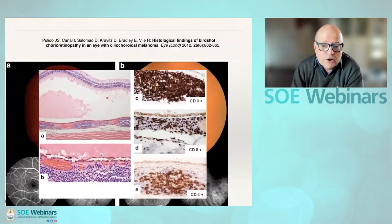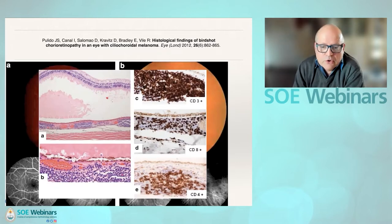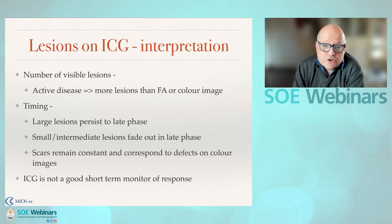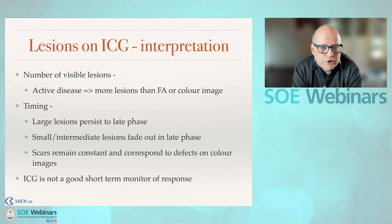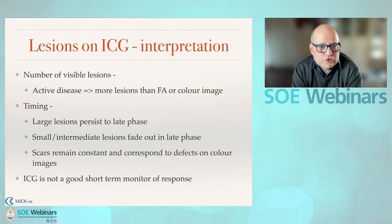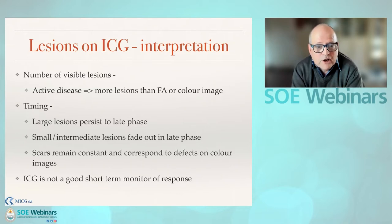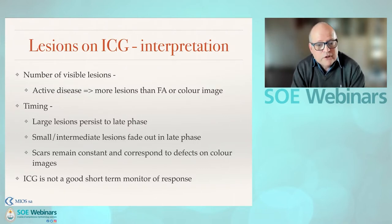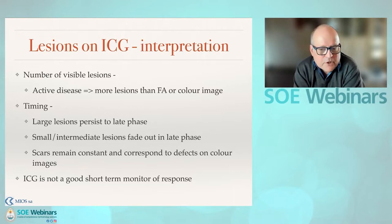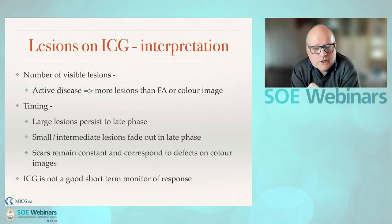ICG is very useful. While OCTA is helpful, the best approach for the choroid is looking at either enhanced depth imaging or ICG, which is crucial. ICG allows you to identify active lesions as areas forming granulomas that are hypocyanescent. Larger ones tend to persist into the late phase, but smaller ones fade out as you go through the ICG phase — you should look at images going out to about 30 minutes. Scars remain constant in appearance and don't color later on. While ICG is good to determine the presence of activity, it's not all that good to monitor.